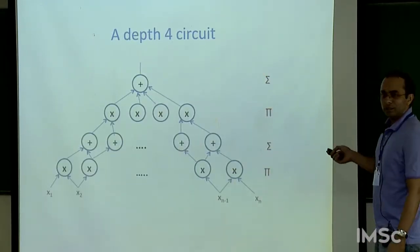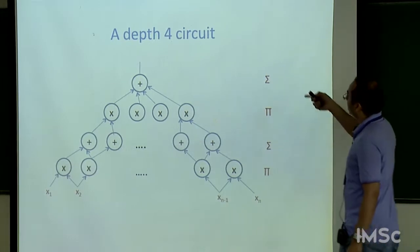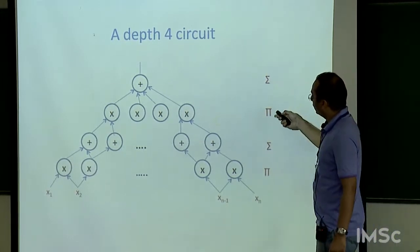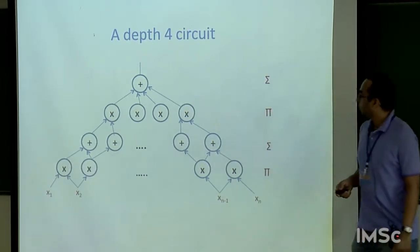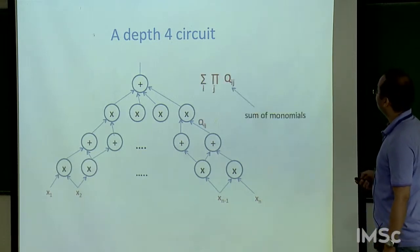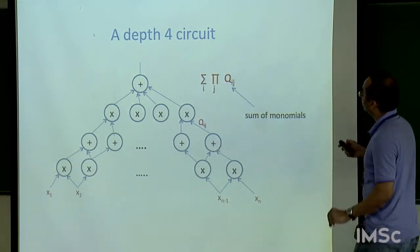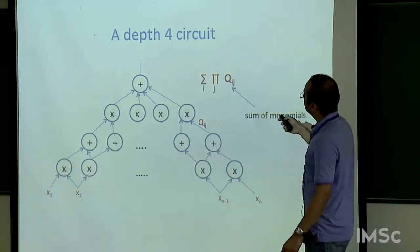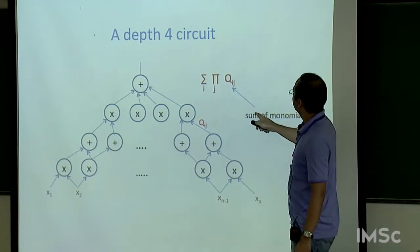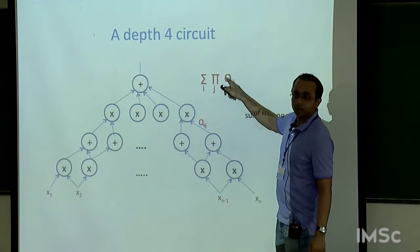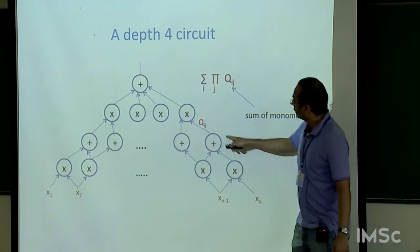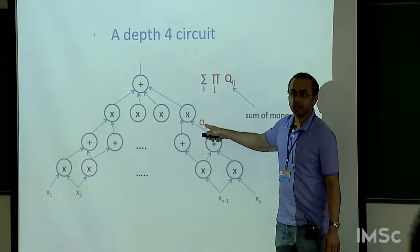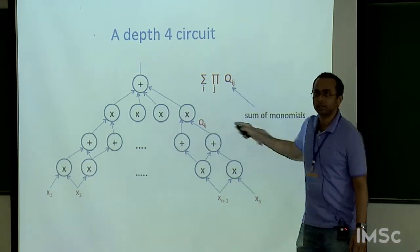A depth 4 circuit looks like this: it has a plus gate, then a product layer, plus layer, and a product layer again. Written as a formula, it is a sum of products of polynomials Q_ij, which are themselves sums of monomials.